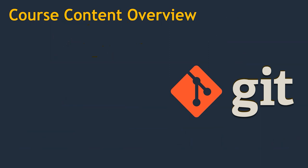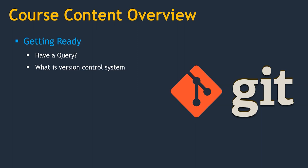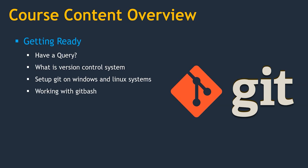Hello folks. In this lecture we are going to discuss the course content overview so you get a clear idea of what you'll learn. The first section is getting ready — if you have queries there are multiple mediums to reach me. Next: what is a version control system? How to set up Git on Windows and Linux systems, and working with Git Bash. This is the first module.